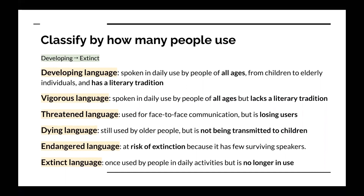Next is threatened language. Threatened language is used for face-to-face communication, but is losing users. Dying language is still used by older people, but is not being transmitted to children — meaning languages that are not being taught to children by their parents and are not being used actively in everyday matters.